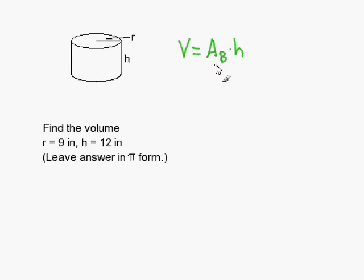In this case, our base area is going to be a circle. We just go pi r squared times h.